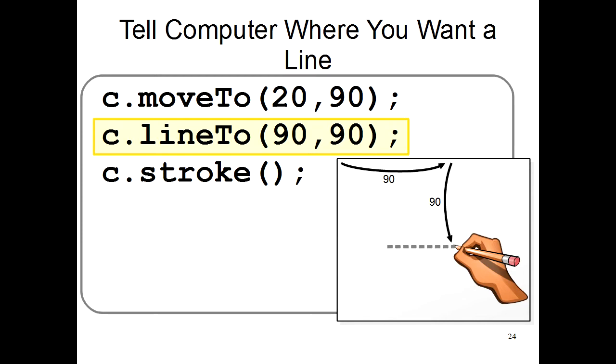In the first line of the program, you move the pen to 20,90 here, and in the second line, you are telling the computer that you want to draw a line going to this new position, 90,90.